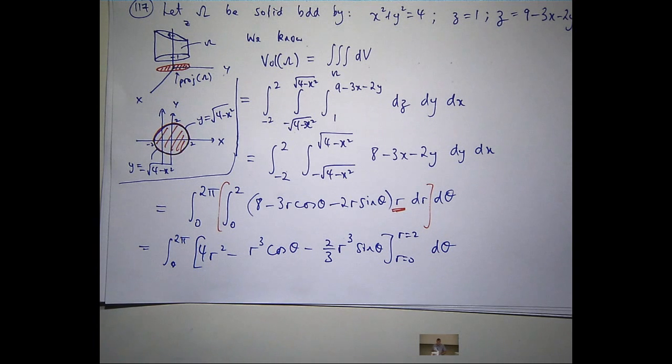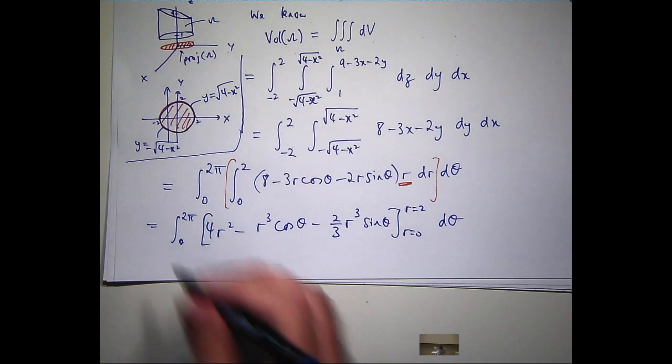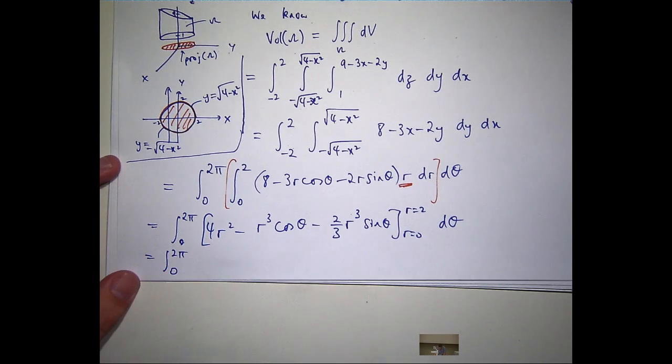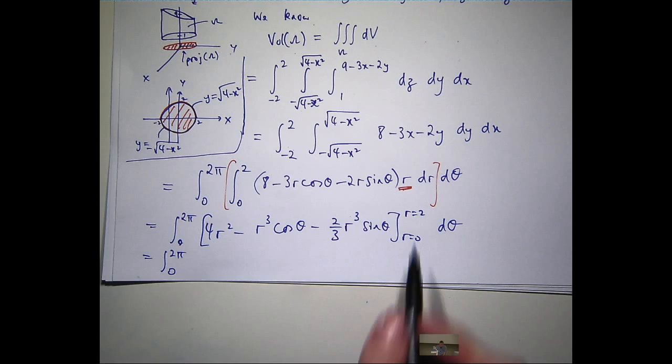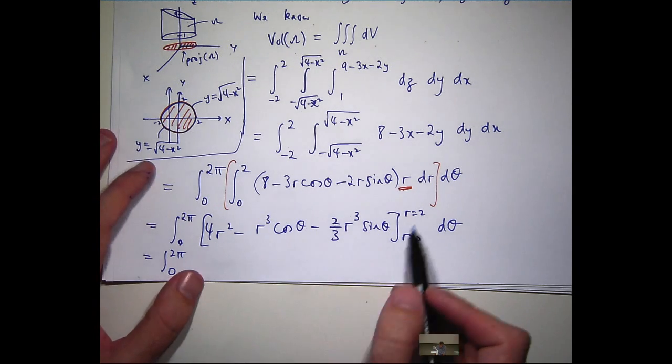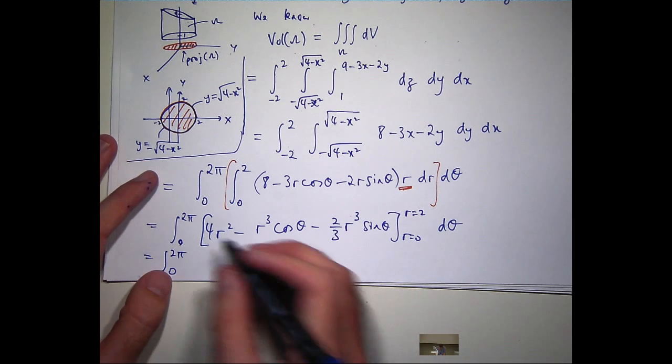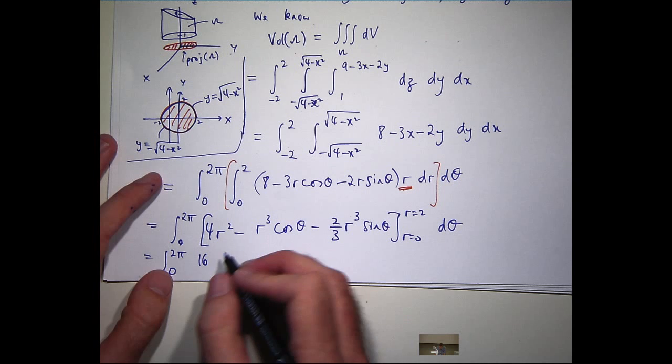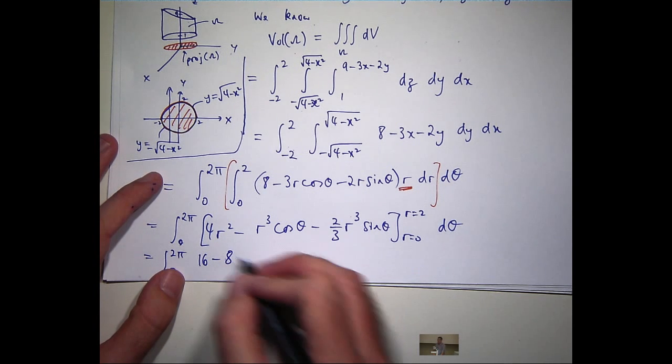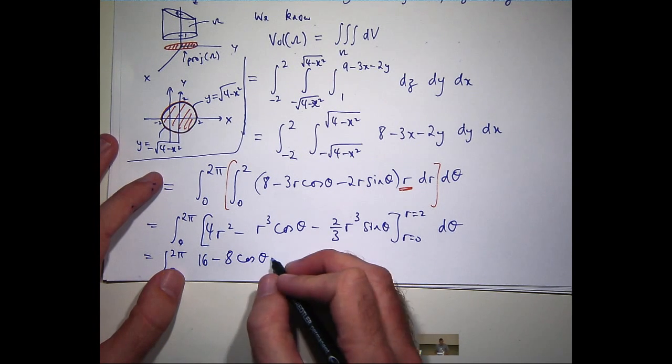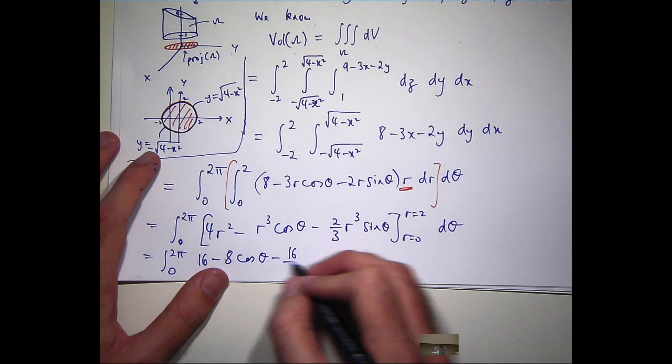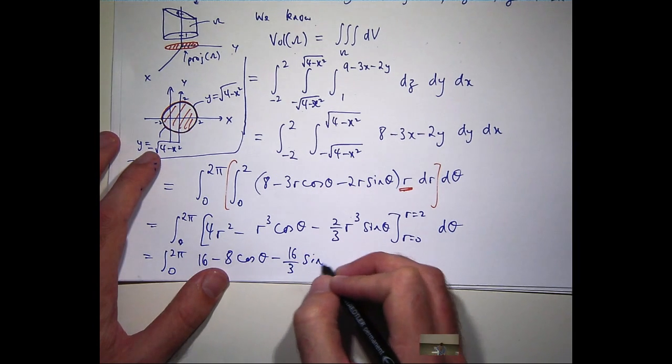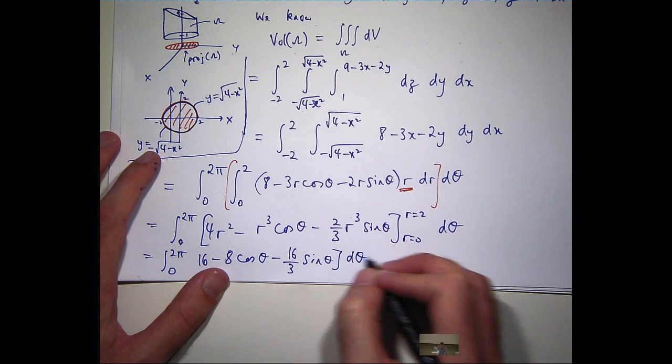When I integrate it, it will be 2r cubed on 3. Okay. So all I need to do now is plug in my r's. So when I plug in r equals 0, everything's going to be 0. So that's not a problem. The first term's going to give me 16 minus 8 cosine theta. I'm going to get 16 on 3 sine theta.